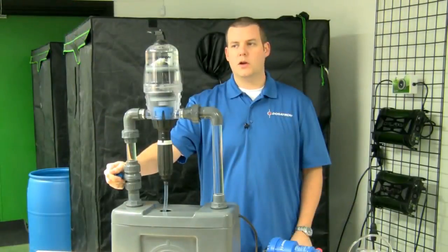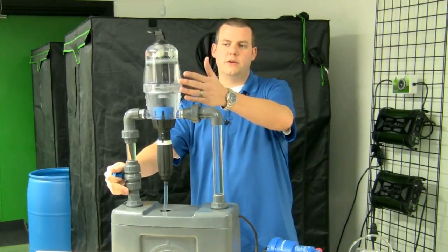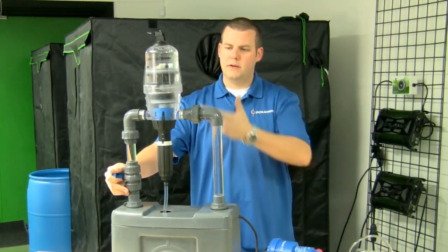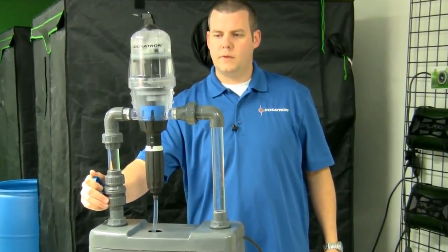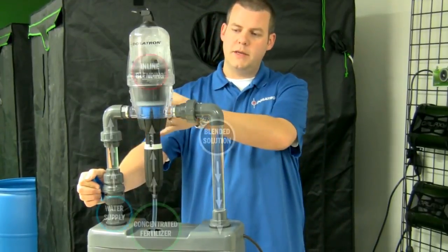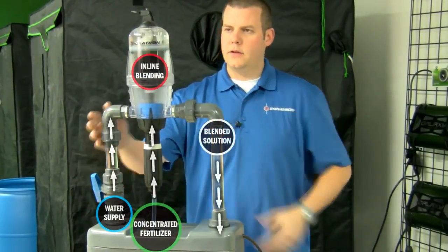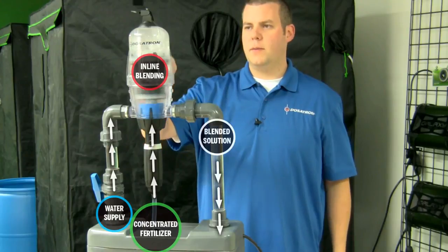As an example, I'm going to go ahead and turn this unit on. This is a clear unit. These units come in blue so you won't have to worry about the clear. This is for demonstration purposes only. Now you can see that the water is coming through the unit.